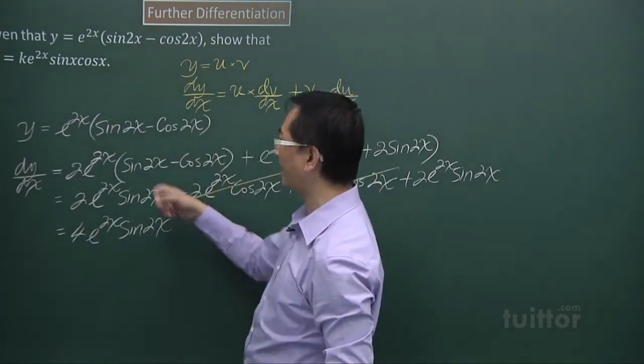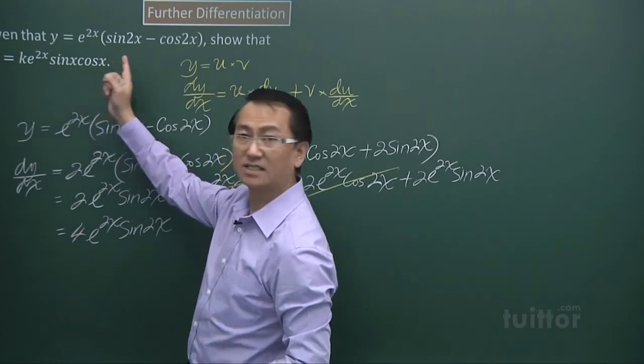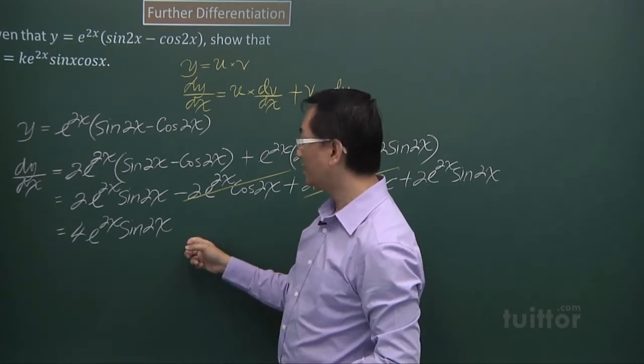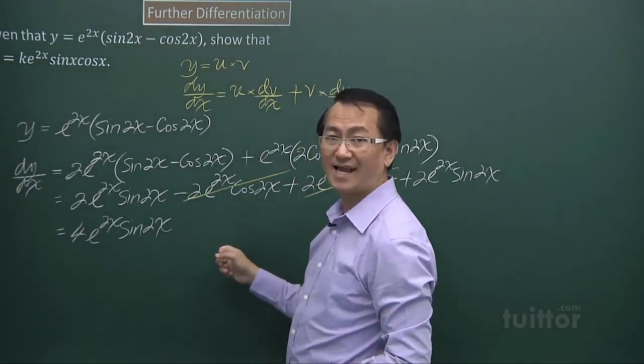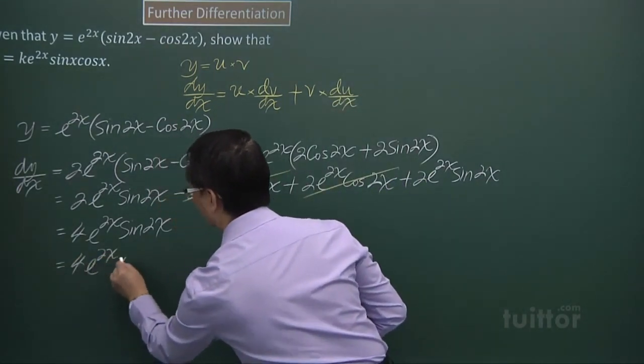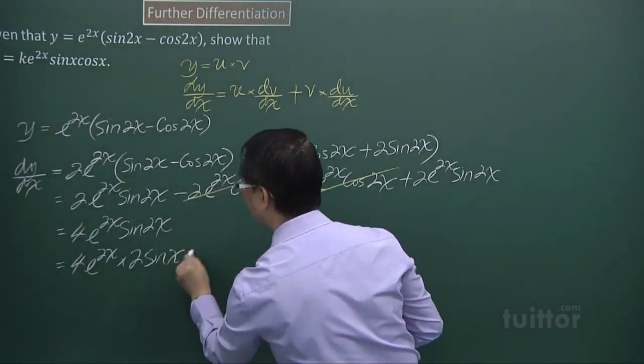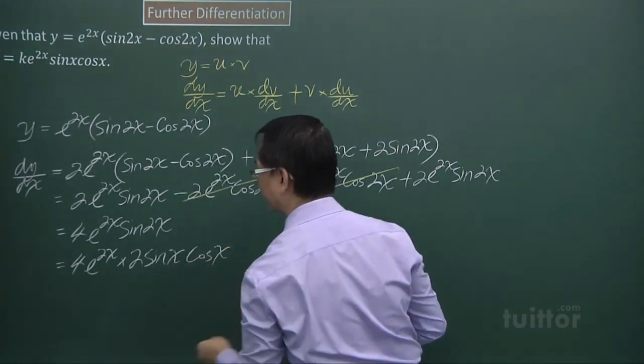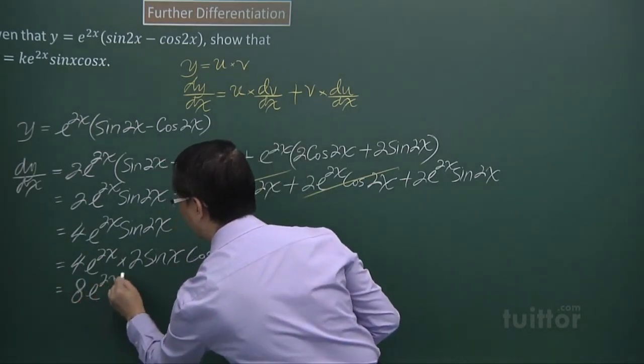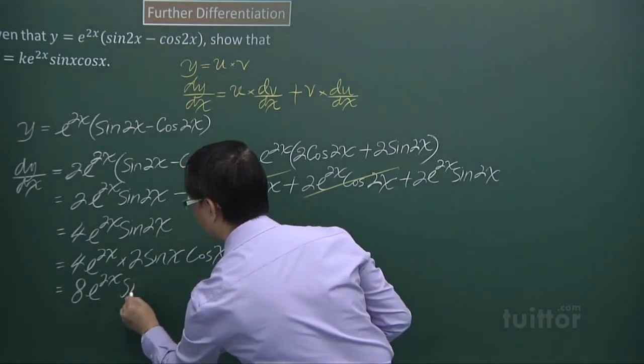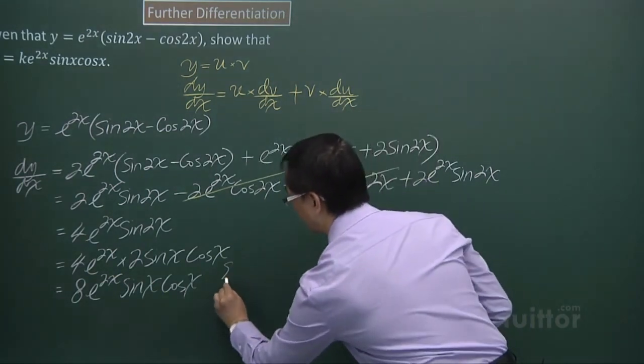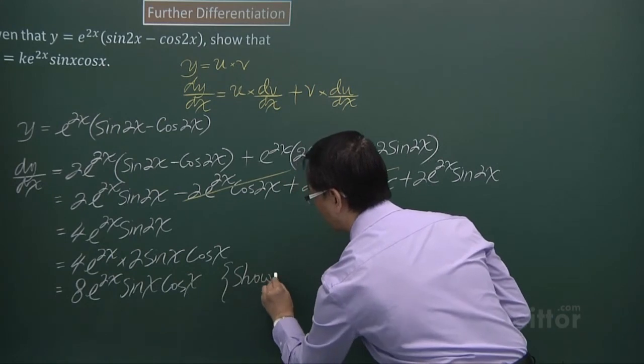And that's not the end yet, because I need sine x cos x. There is a rule involving sine 2x, and that is 2 sine x cos x. So write it like that, 2 sine x cos x. Take the 2, multiply it to the 4, I get 8 e to the power 2x, then sine x cos x. So finish it off, shown.